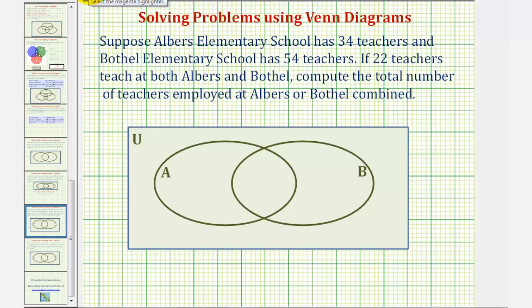Notice how we're told that 22 teachers teach at both schools, which means there will be 22 teachers in the intersection of set A and B, or this region here. So we have 22 teachers here.